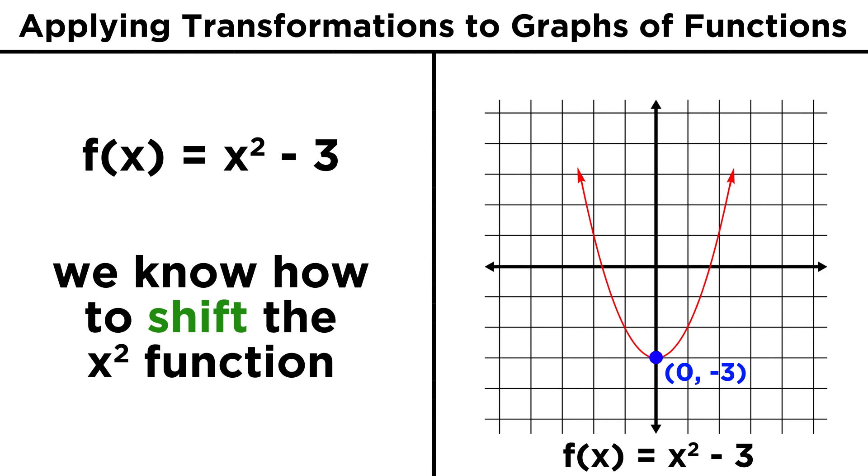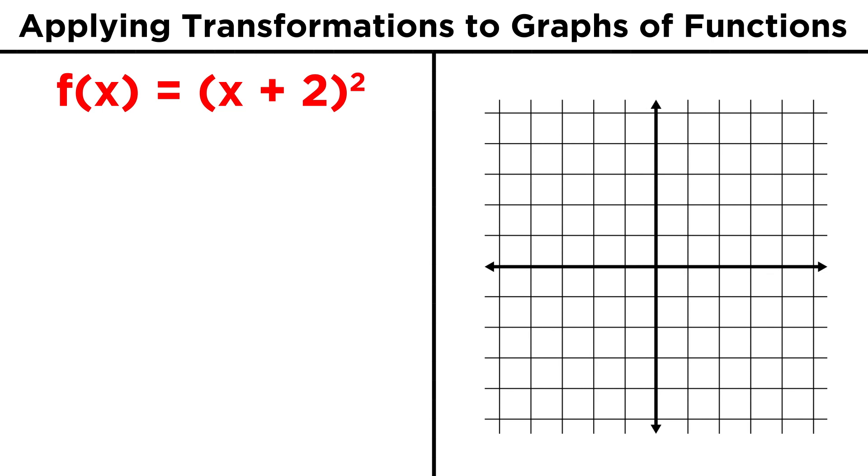Putting the vertex at zero, negative three. Now let's look at the second case, x plus two quantity squared. Again, let's make a table so we can see what's going on.